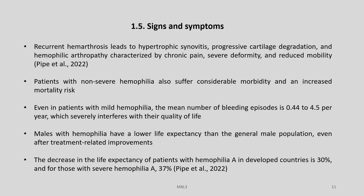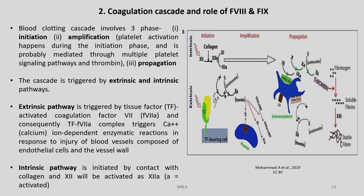The signs and symptoms of haemophilia include recurrent haemarthrosis leading to hypertrophic synovitis, progressive cartilage degradation, and haemophilic arthropathy characterized by chronic pain, severe deformity, and reduced mobility. Patients with non-severe haemophilia also suffer considerable morbidity and increased mortality risk. Even in mild haemophilia, the mean number of bleeding episodes is 0.44 to 4.5 per year, which severely interferes with quality of life. Males with haemophilia have lower life expectancy than the general male population, with the decrease being 30% for Haemophilia A and 37% for severe Haemophilia A in developed countries.